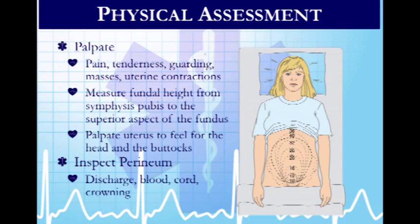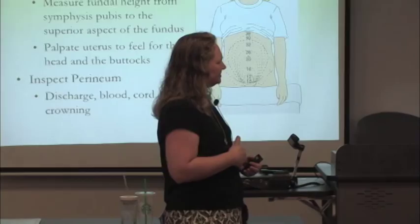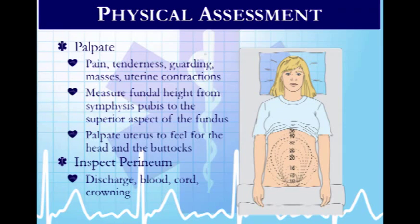On physical assessment, you're looking for the fundus. As you're palpating the belly, you start above the symphysis pubis, working your way up, looking for the top of the uterus. Based on the fundal height in centimeters, you can estimate how many weeks along the woman is. At 20 weeks, it should be about at the umbilicus, and past 20 weeks it proceeds above the umbilicus.